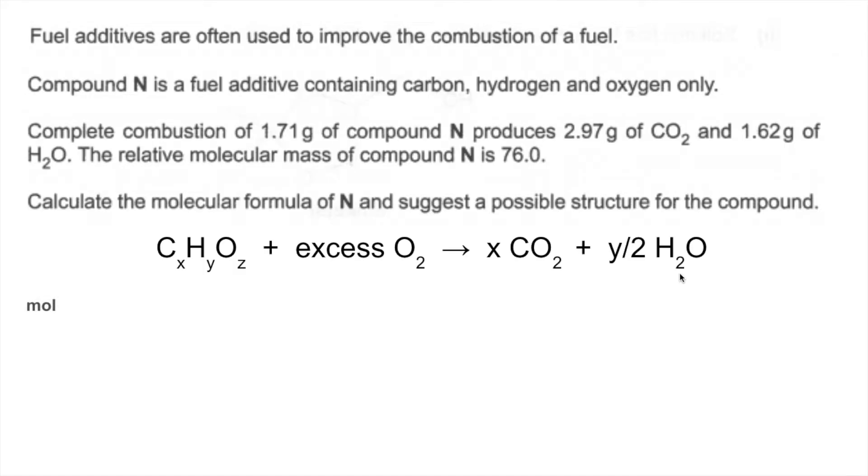So the next thing I've done is calculated some moles values. So the moles of N is mass over MR. So that's 0.0225. The moles of CO2 produced, mass over MR again, 0.0675. And same again, so 0.09 moles of water. So I've ratioed them now by dividing them all by the smallest. So we get a 1 to 3 to 4 ratio.